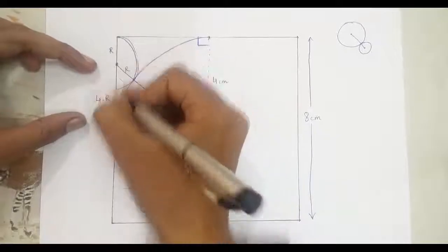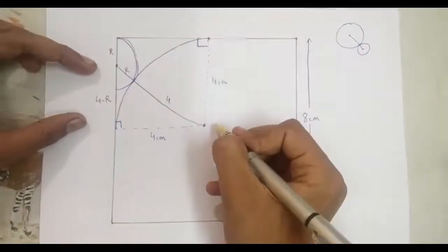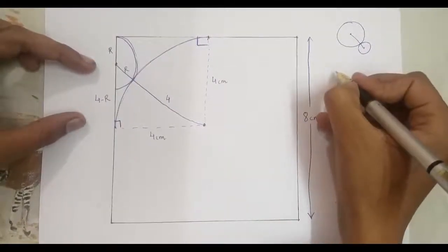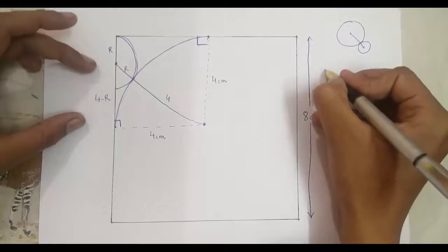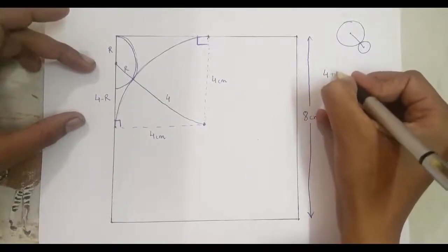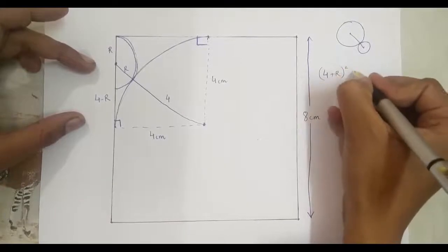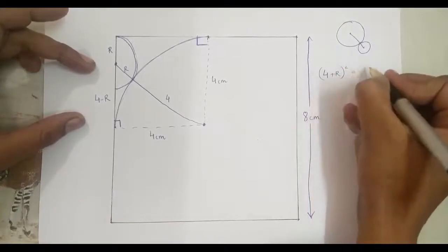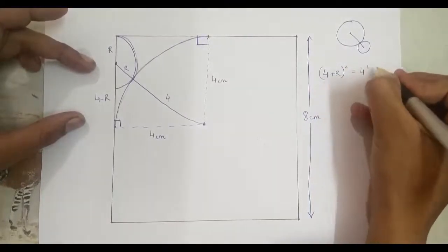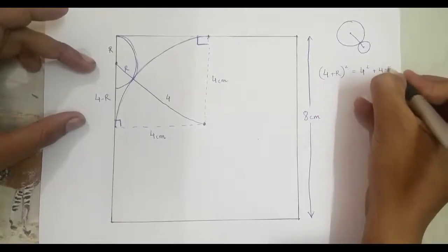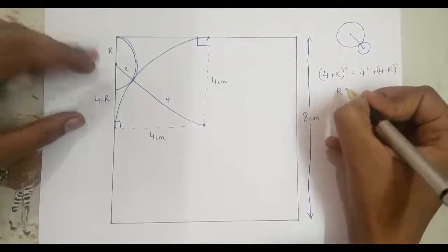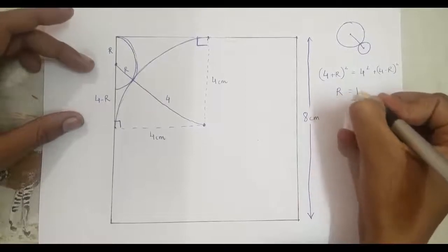Using the Pythagorean theorem in this triangle over here, you can easily solve r to be equal to 2 by the equation: 4 plus r, whole squared, equal to 4 squared plus 4 minus r, whole squared. r would turn out to be equal to 1 centimeter.